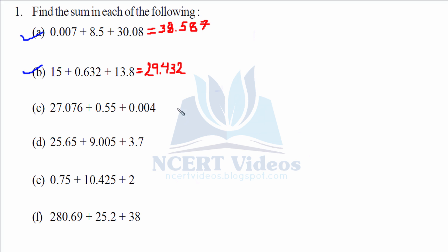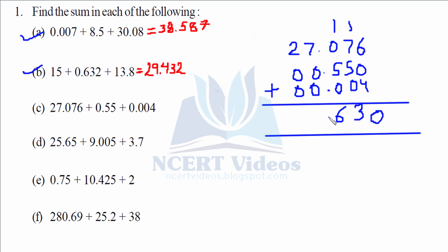Part C: 27.076, 0.55, 0.004. 6 plus 4 gives you 10. Therefore 0.008 plus 5 gives you 13, 6, 7, 2. Therefore 27.630.